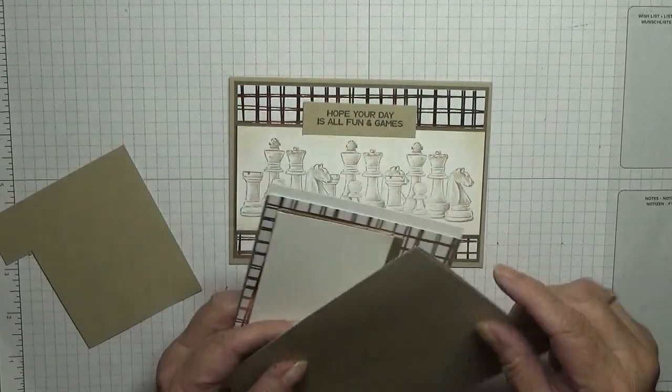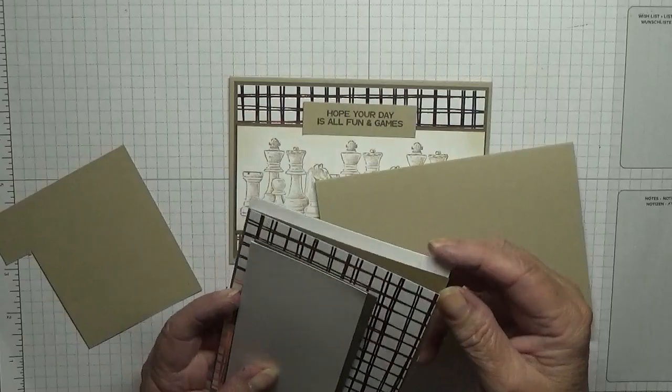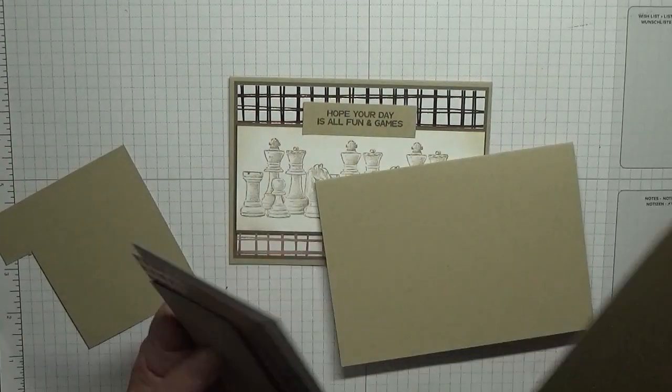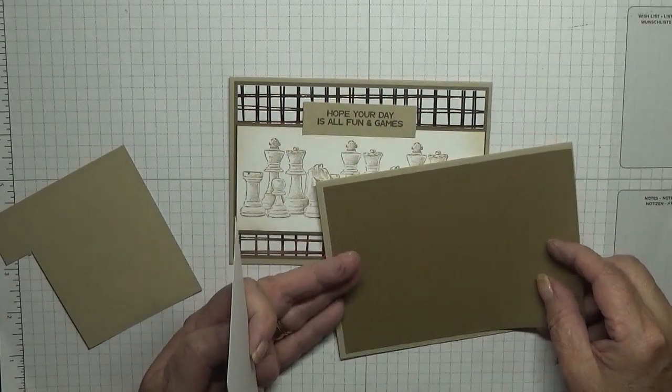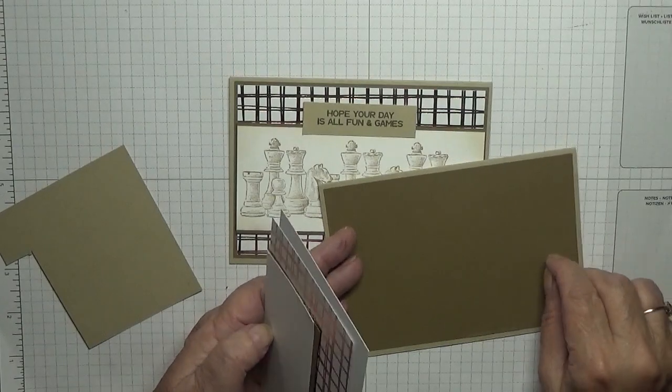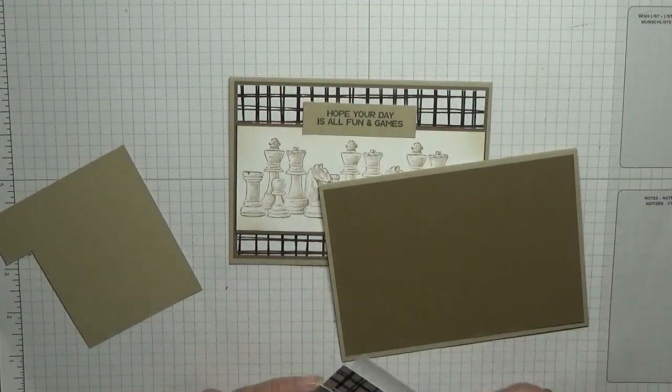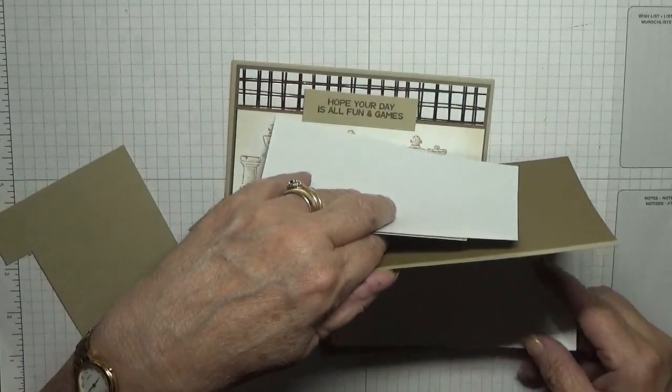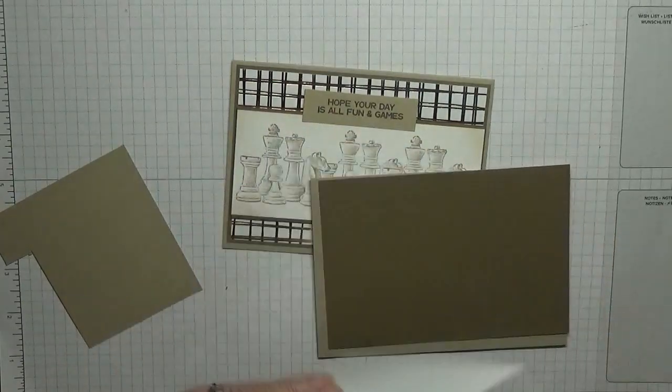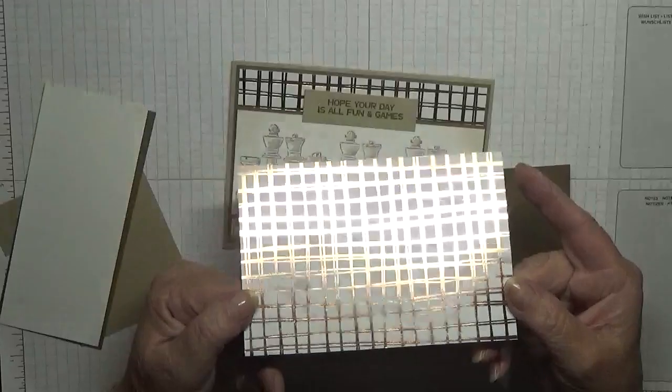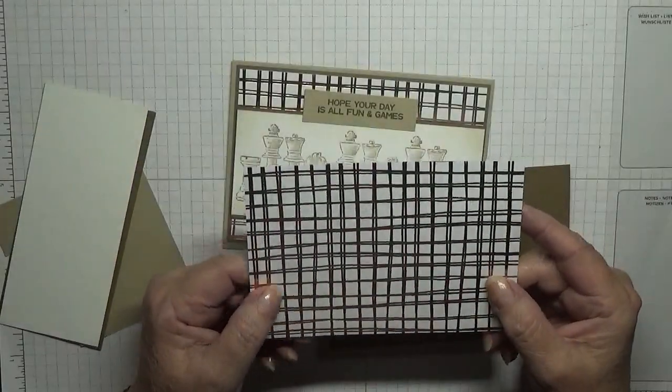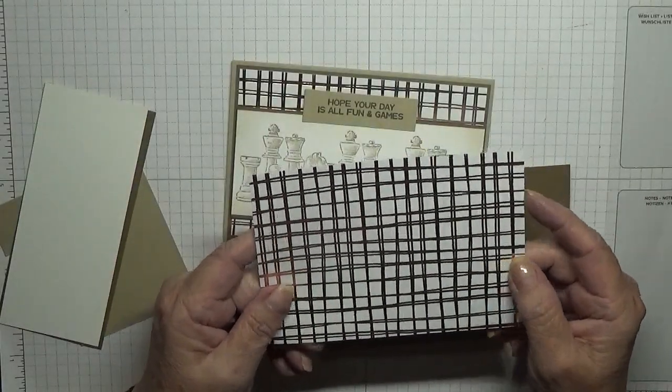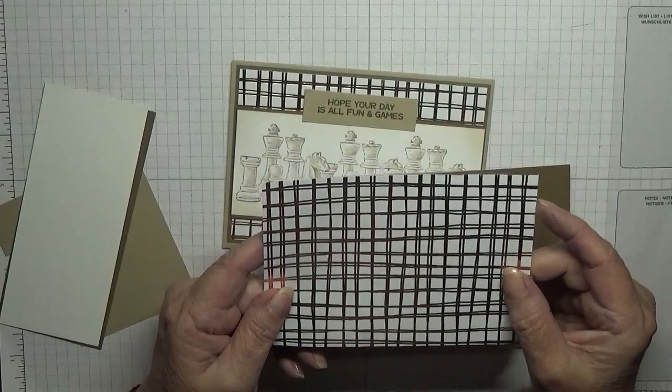The cardstock I've got is a crumb cake base of eight and a quarter by five and seven eighths scored at four and one eighth, a piece of soft suede at five and five eighths by three and seven eighths, and a piece of white at five and five eighths by three and seven eighths for the inside.